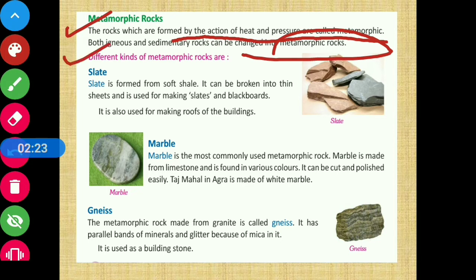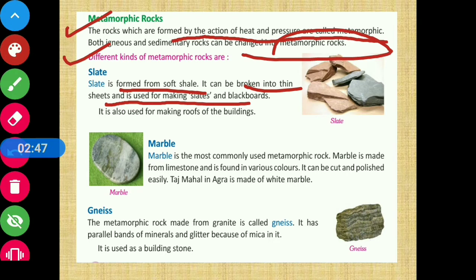The first type of metamorphic rock is slate. Slate is formed from soft shale. It can be broken into thin sheets and is used for making slates and blackboards. It is also used for making roofs of buildings.